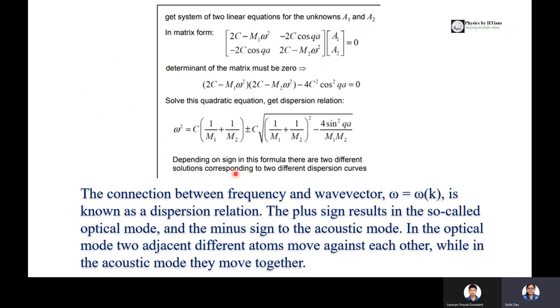The solution of ω² can be two types because one with positive sign, another with negative sign. Depending on the sign in this formula, there are two different solutions corresponding to different dispersion curves. The plus sign results in the so-called optical mode and the minus sign results in the acoustic mode.